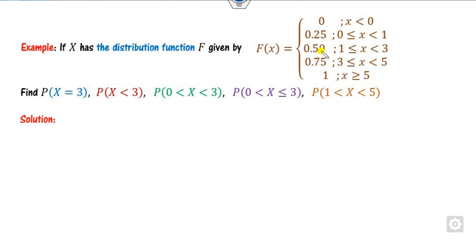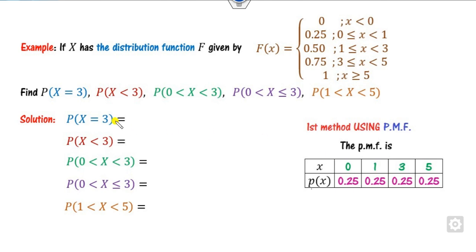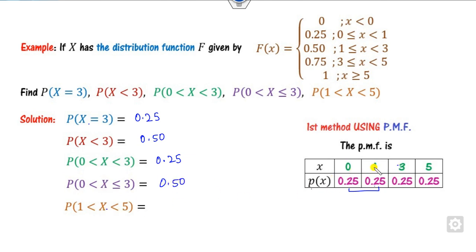Now using this PMF, how do we find probabilities? Since it is discrete, Method 1 uses the PMF directly. P(X = 3) = 0.25. P(X < 3) corresponds to values 0 and 1, so that is 0.50. P(0 < X < 3): only x = 1 is included, so 0.25. P(1 ≤ X ≤ 5): includes 1 and 3, so 0.50. This is Method 1 using the PMF.